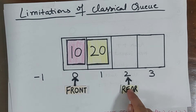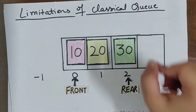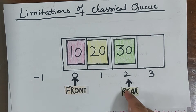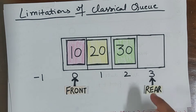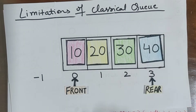Now again I want to insert data 30, so first rear will become rear plus plus and then I will insert data 30. Again if I want to enqueue 40, then first rear will become rear plus plus and then I will insert 40.